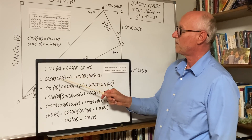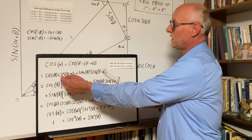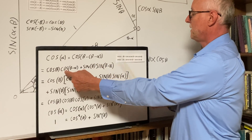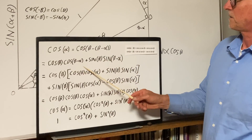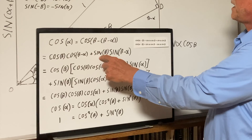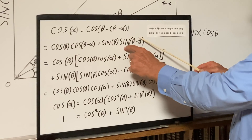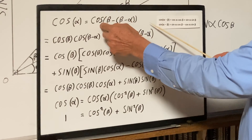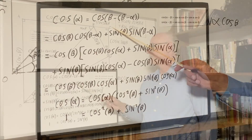We have cosine of the first part, beta, and then the second part is cosine(beta minus alpha), and so that gives us this term, plus sine beta — the first part — times sine(beta minus alpha), and that's the expansion of this cosine difference angle formula.